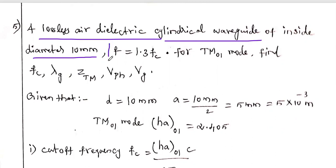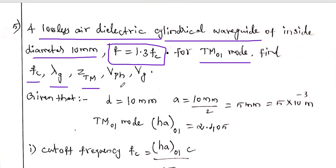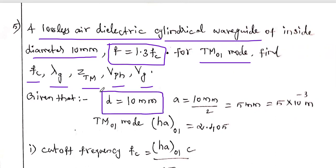The frequency f is given as 1.3 times the cutoff frequency — so the operating frequency is not directly given. For TM01 mode, find Fc, λg, ZTM, Vp, and Vg. Given data: diameter = 10 mm.